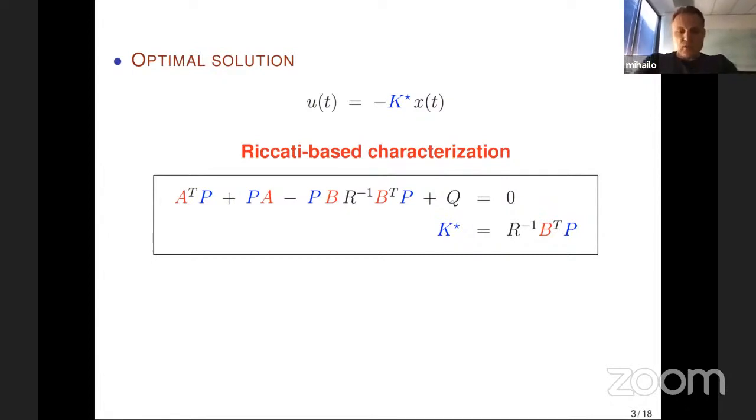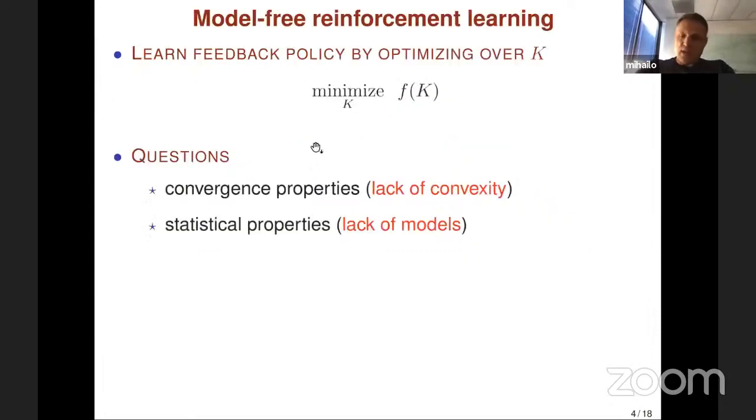One way to approach this is to use data to identify model parameters. Ben and his group have taught us how this should be done properly. An alternative approach is to attempt to learn feedback policy by optimizing over feedback gain matrices.